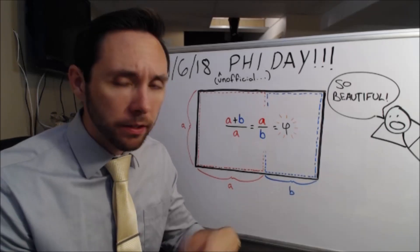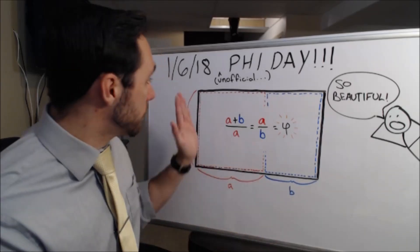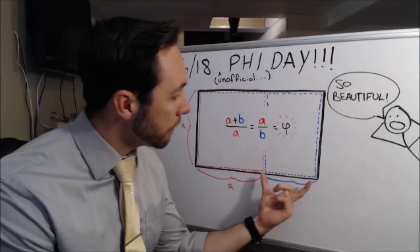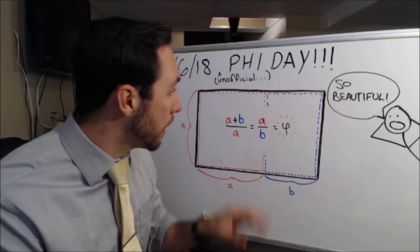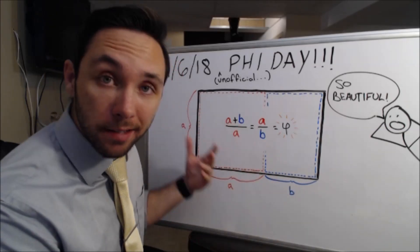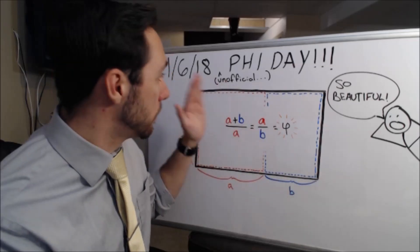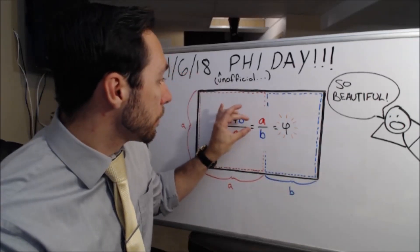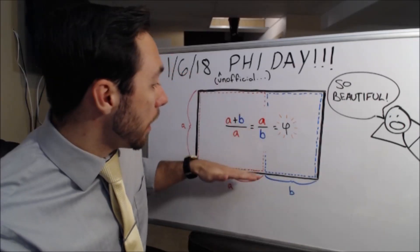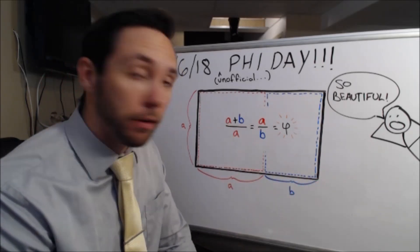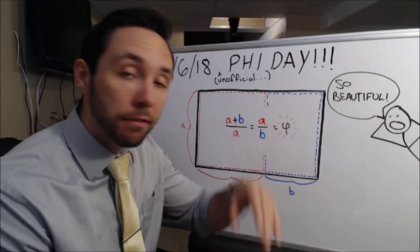So imagine you had a rectangle and you created some sort of square within it, and you have side lengths A and A. If you have this additional length B, such that this ratio can be established, so the ratio would be this longer length to this width. If that can be set equal to A over B, you actually have the golden ratio, 1.618, Phi itself.